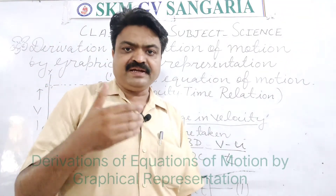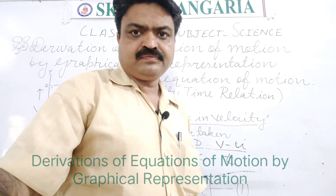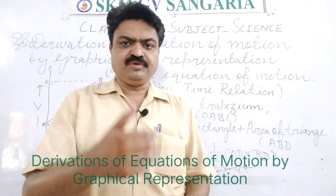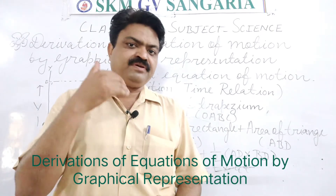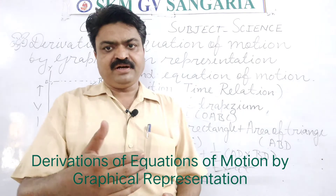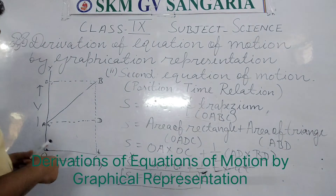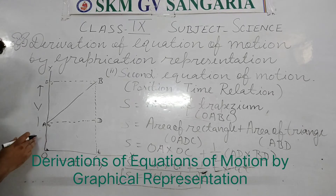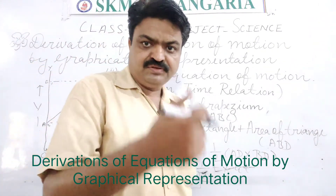Now we come to the second equation of motion. We will derive the second equation of motion, which is the position-time relation. We will use the same graph drawn for the first equation of motion, where an object is moving with uniform acceleration and the initial velocity is not zero.